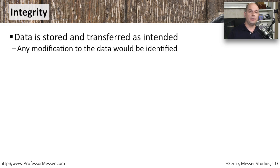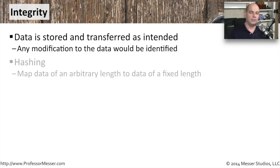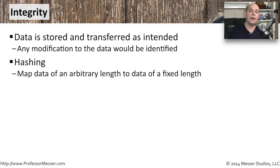In the security world, integrity means that when we send information from one point to another, that information is not changed anywhere in between, and everything received is stored exactly the way it was intended when it was sent. That means if any part of this data has changed anywhere in that transmission, we are aware that this change has occurred. One way to maintain integrity is to create a hash of what we've sent. On the other end, after this information has been received, the other end can perform exactly the same hashing algorithm, and then compare the original hash with the ultimate hash that was received.